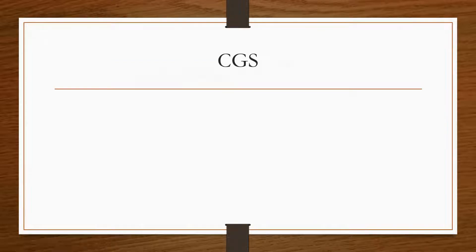Now first of all, let us start with the CGS system. Now CGS means C is for centimeter, G is for gram, and S is for seconds.